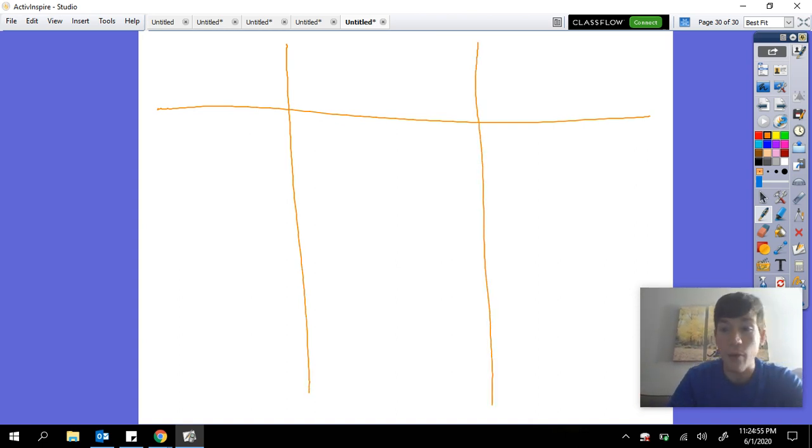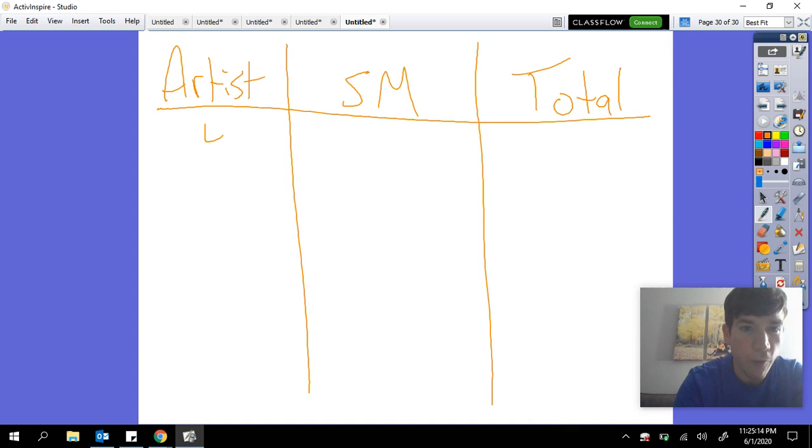So for example, we know that 4 artists and 3 stonemasons equals 37. We know that 3 artists and 4 stonemasons equals 33. Now from this we can start to guess and check some possible amounts.